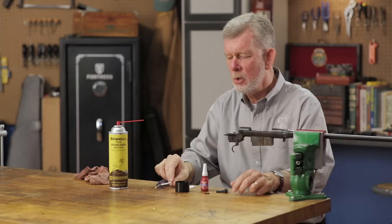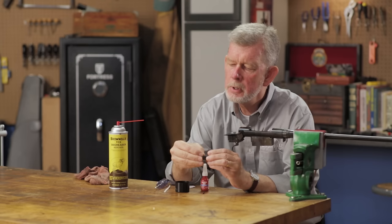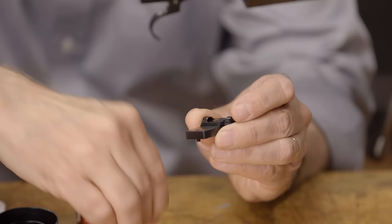I've already soaked the screws for this scope mount in some alcohol, so they're clean. I'm going to put those in the mount right now. I like to put these in first because it minimizes the mess when you put the Loctite on.